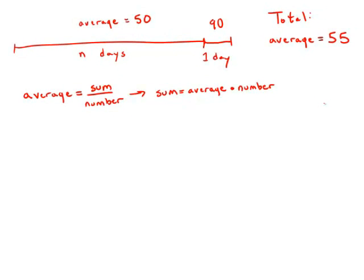For the past n days, the average daily production of the company was 50 units. If today's production of 90 units raises the average to 55 units per day, what is the value of n?